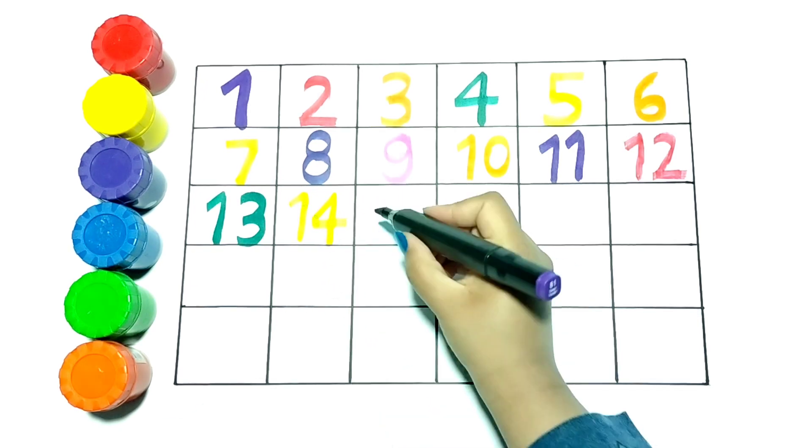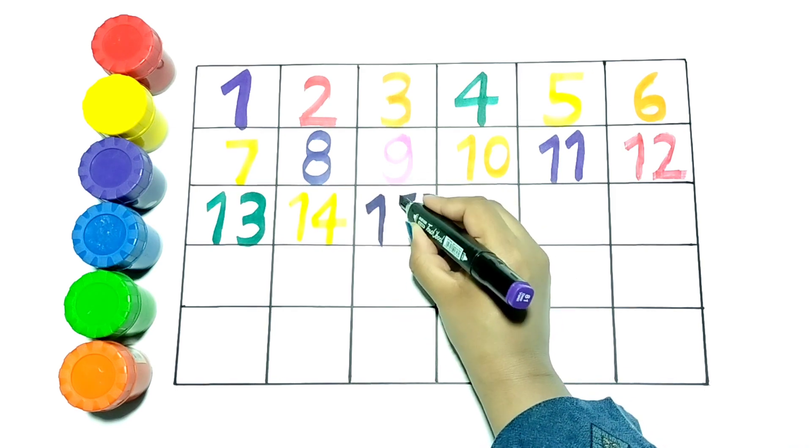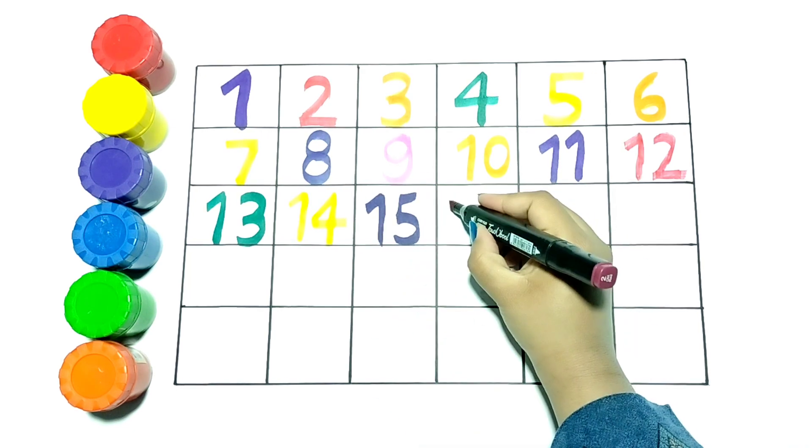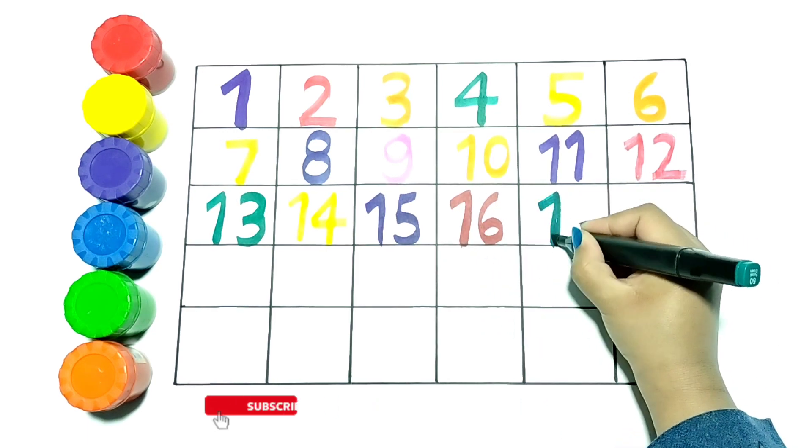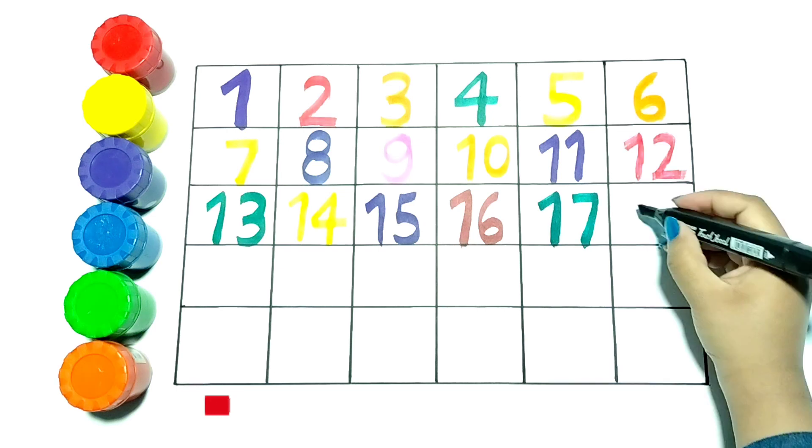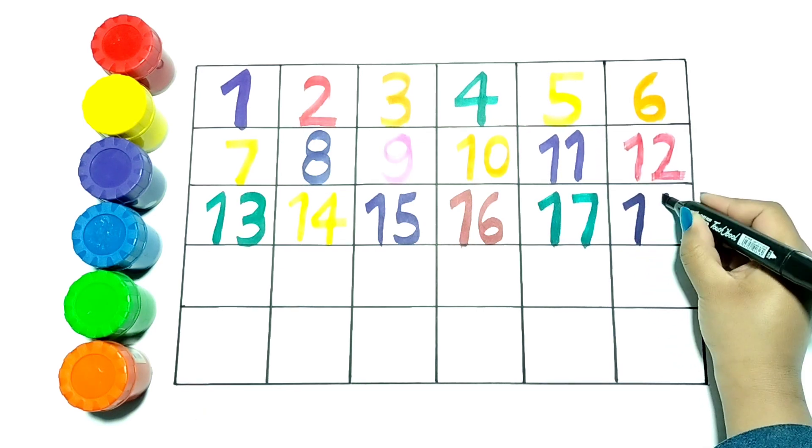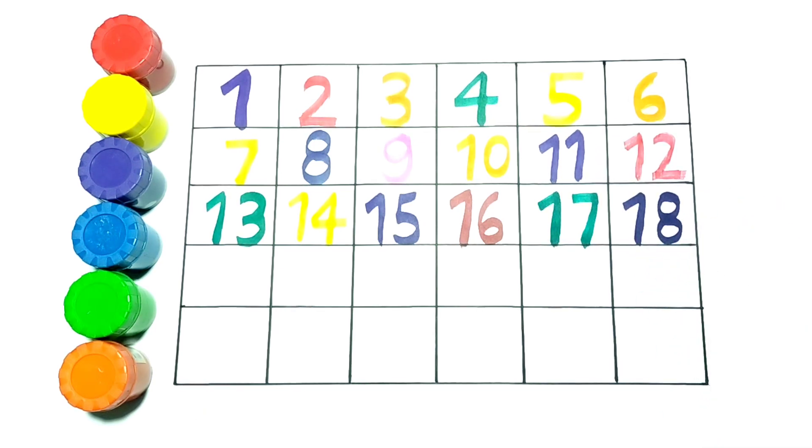Now I am writing 16 with red color. Next number is 17. It is green in color. Now let's write 18 with purple color.